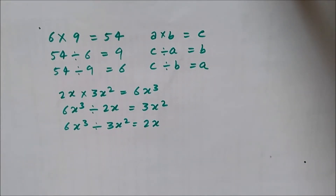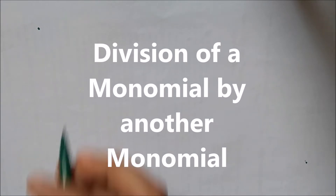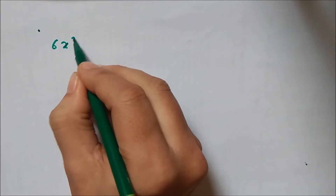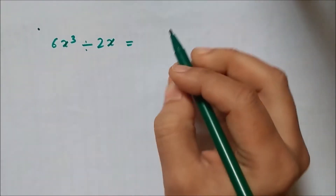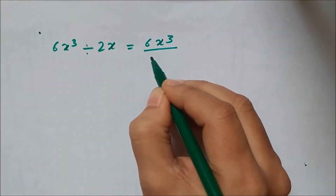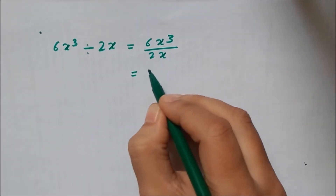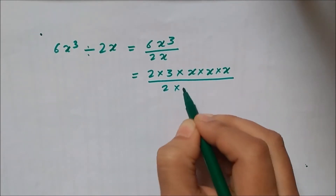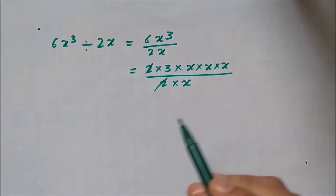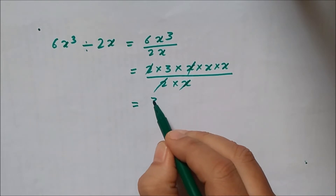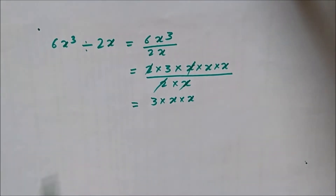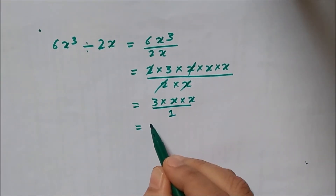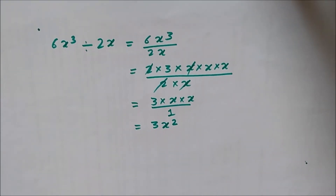We shall now look at how the division of one expression by another can be carried out. The first case is division of a monomial by another monomial — single terms. Take 6x cubed divided by 2x. We expand into factors: 2 × 3 × x × x × x divided by 2 × x. Cancelling common factors 2 and x, the remaining term is 3 × x × x, which gives 3x squared.